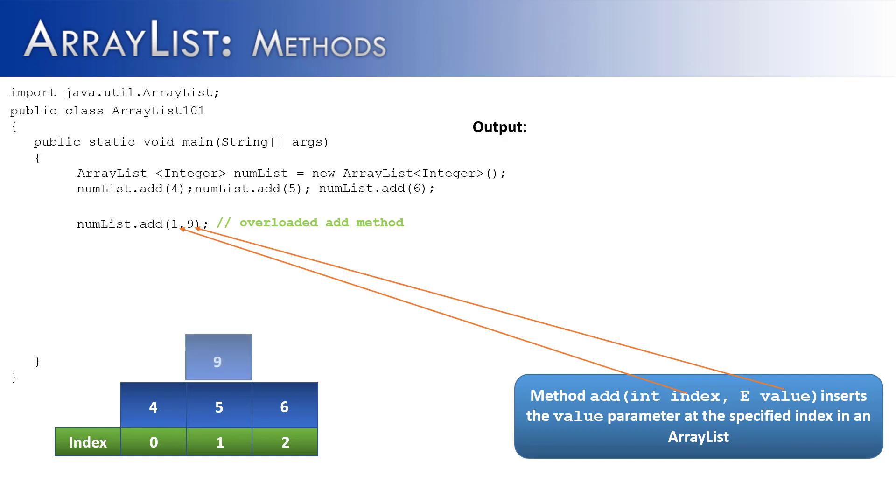So what this program is going to do is it's going to take the 9, insert it at the 1 index. Unfortunately, the 5 is already there, so the 5 and 6 already inside of the ArrayList are going to have to be shifted over, and then that 9 can be inserted. So now the ArrayList, instead of being 4, 5, 6, is 4, 9, 5, 6.